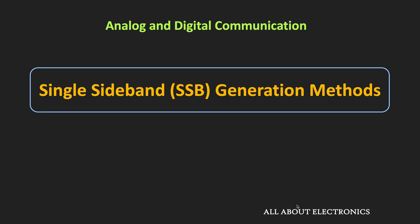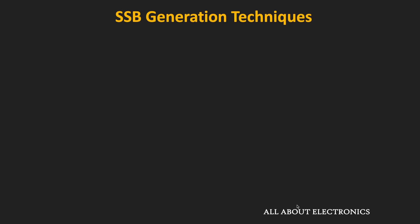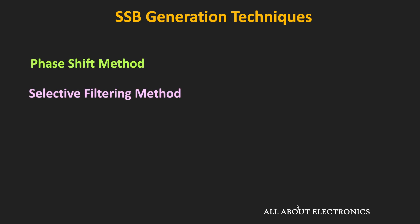Hey friends, welcome to the YouTube channel all about electronics. In this video, we will see the different methods for generating the SSB signal. There are three different methods: the phase shift method, the selective filtering method, and the third method, which is also known as the Weaver's method.